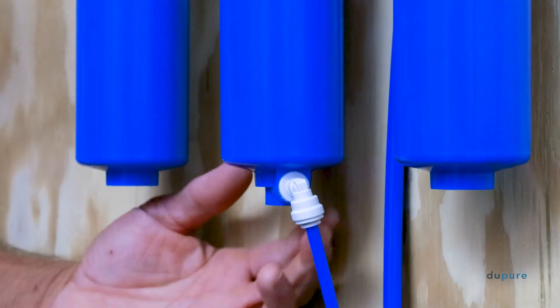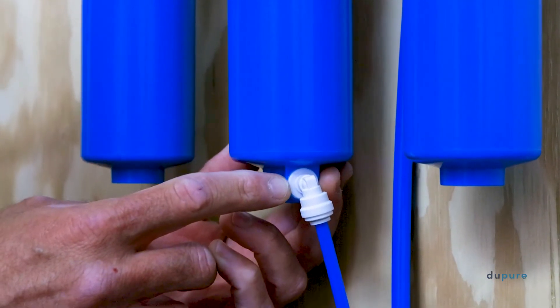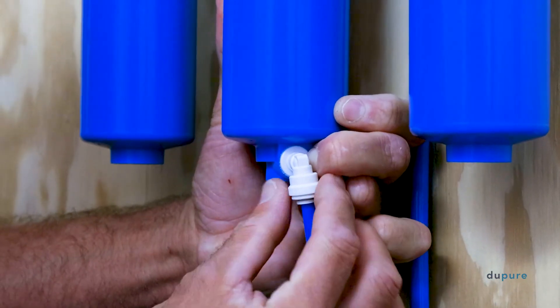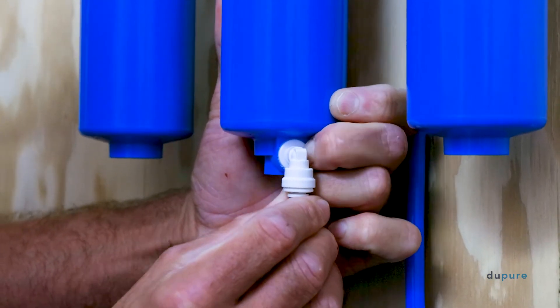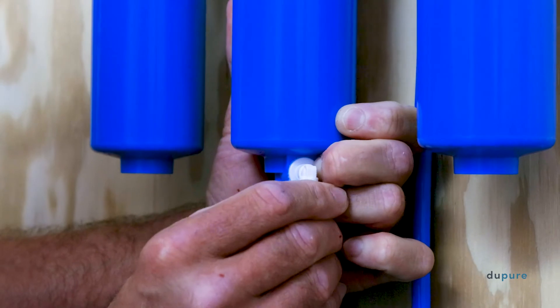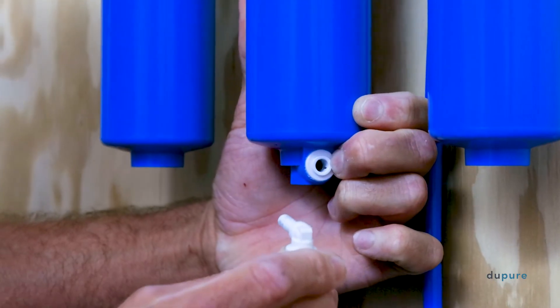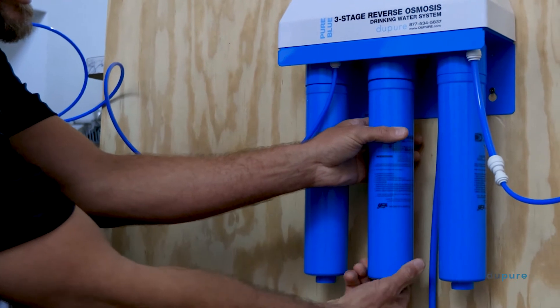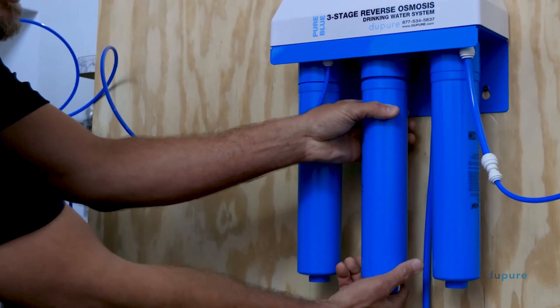To do that, unscrew the membrane a half turn and then push the small collet in while pulling the drain line out simultaneously. Finally, unscrew the membrane filter until it is completely out of the manifold.